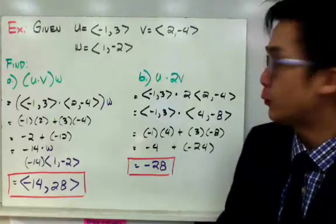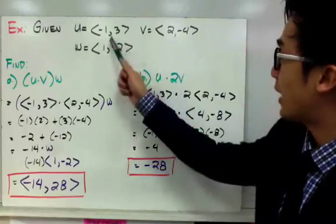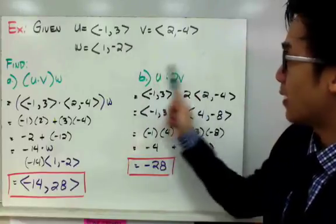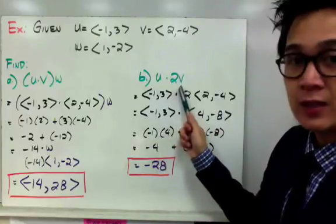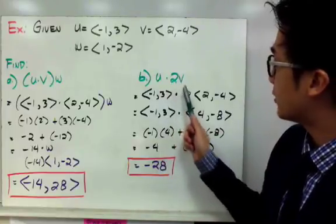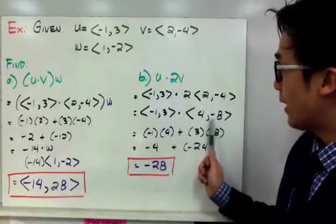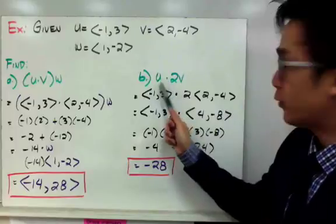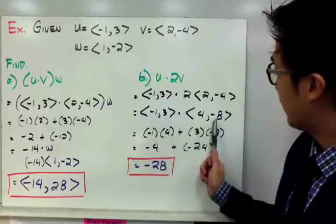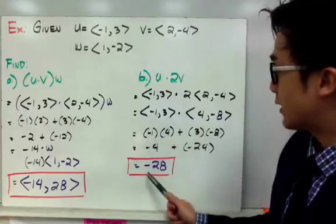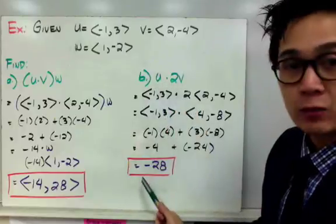For letter b, I have u·(2v). First, let's simplify 2v by scalar multiplication. So 2 times vector ⟨2,-4⟩ gives you ⟨4,-8⟩. Now perform the dot product for u and 2v, and you'll have (-1)(4) plus (3)(-8), which gives you -28. So u·(2v) equals -28, a scalar.